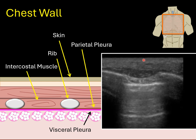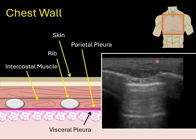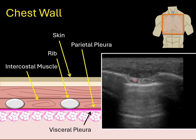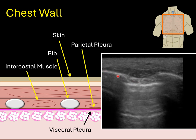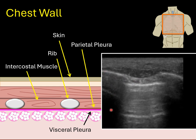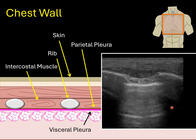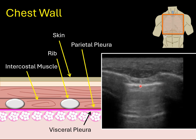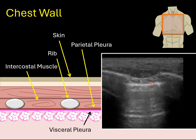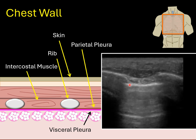Here's an ultrasound image with a linear probe at the same location, indicating skin and some intercostal muscle. You have a hyper-echoic rib with a shadow behind it on each side. And finally, you have your pleural line, which shows that the visceral and parietal pleura are touching each other since you see movement along this line.